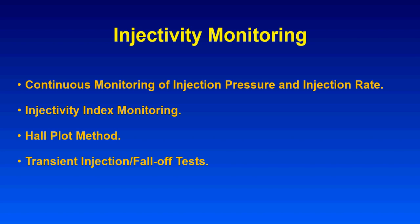The fourth item is transient testing. You can conduct an injection test by running a memory gauge downhole and analyzing it with pressure transient analysis software such as Kappa, PIwell tests, or similar tools.